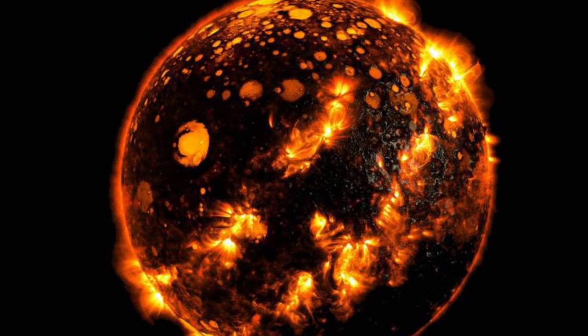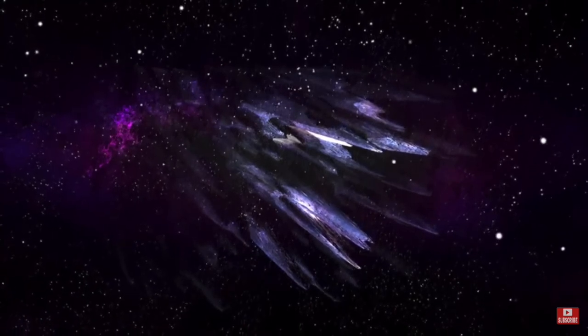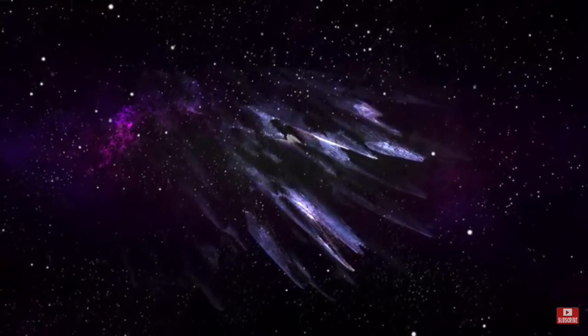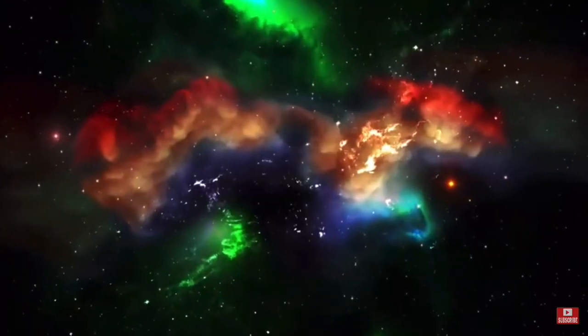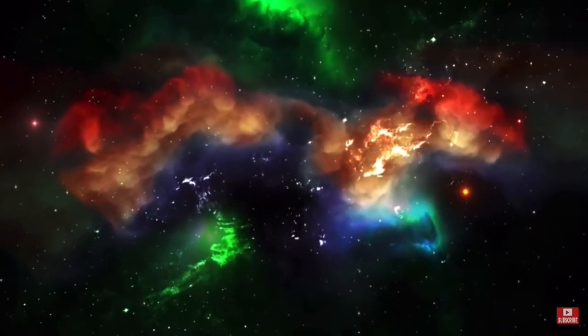First, we have Iron Stars, which are a hypothetical type of star that could exist in 10 to the 1500 years, where light nuclei slowly turn to iron nuclei. This would turn the star into a giant sphere made of iron.